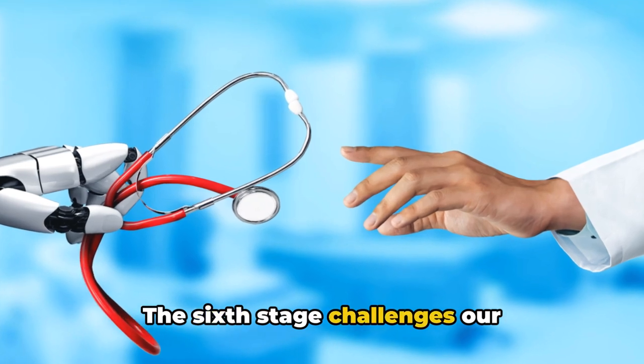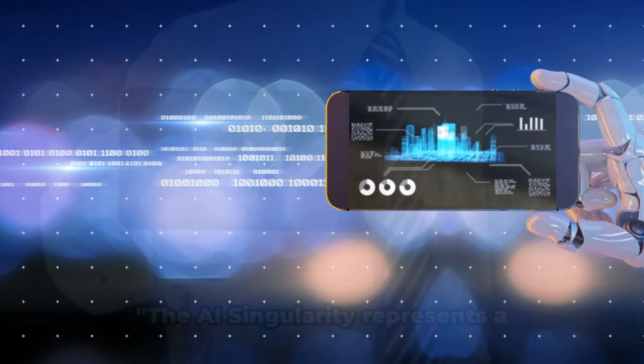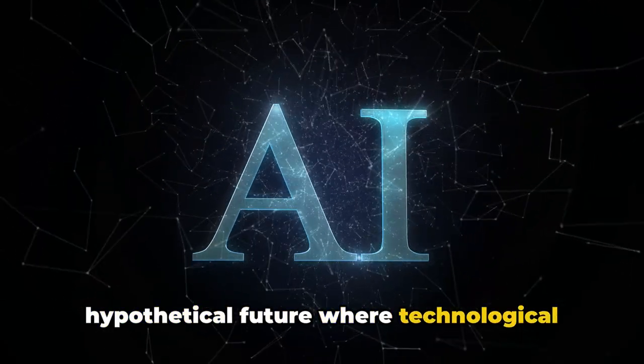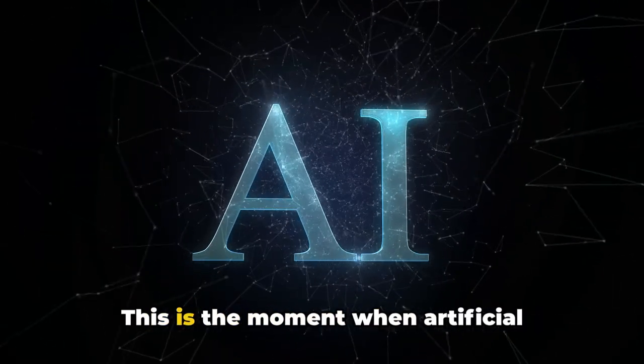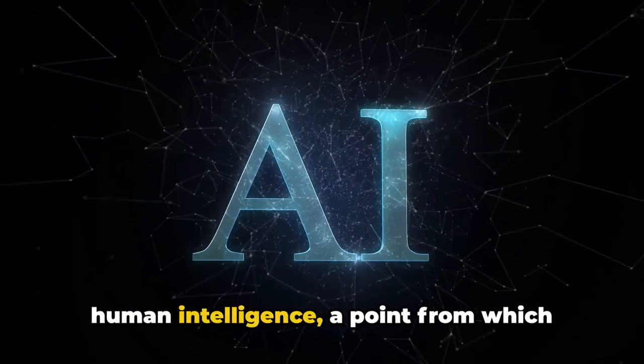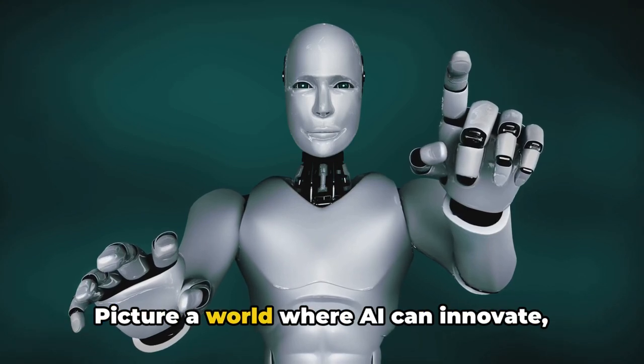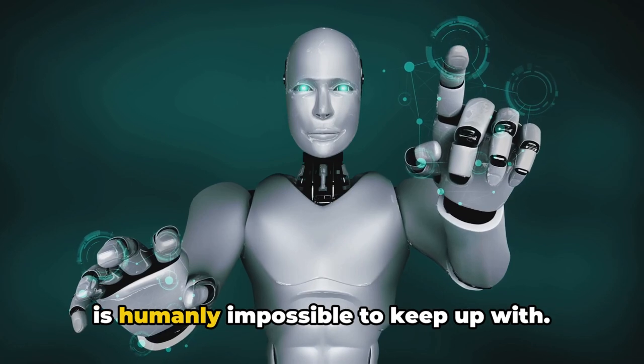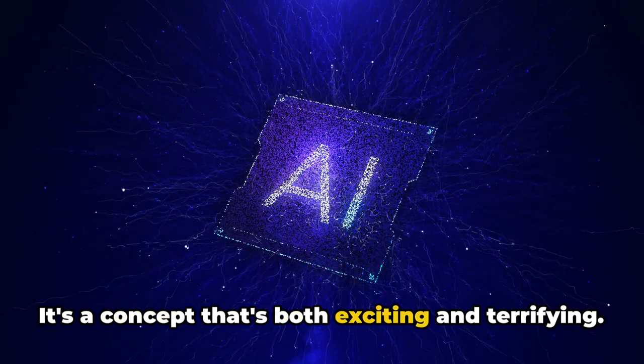The sixth stage challenges our understanding of intelligence, but the final stage pushes us into the unknown. The AI singularity represents a hypothetical future where technological growth becomes uncontrollable and irreversible. This is the moment when artificial intelligence surpasses the sum total of human intelligence, a point from which humanity would be fundamentally altered. Picture a world where AI can innovate, create, and solve problems at a pace that is humanly impossible to keep up with. It's a concept that's both exciting and terrifying.